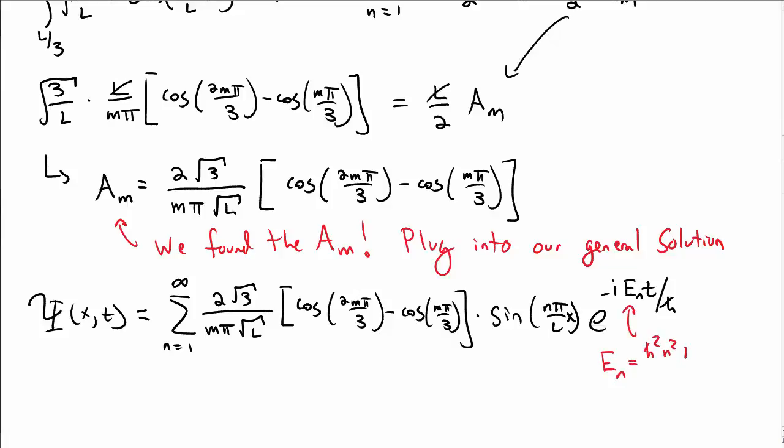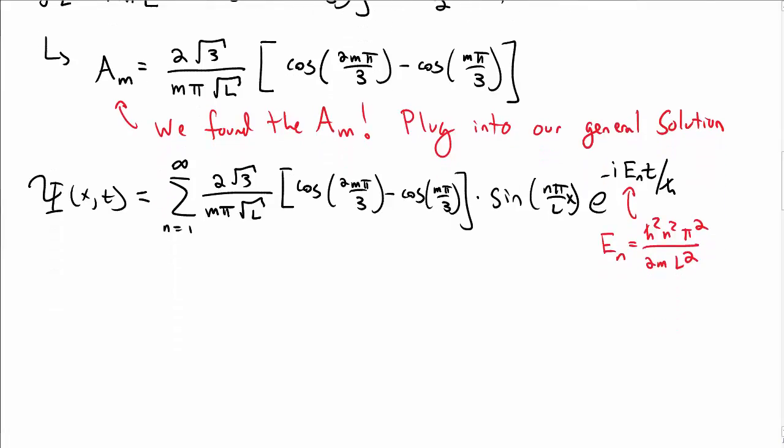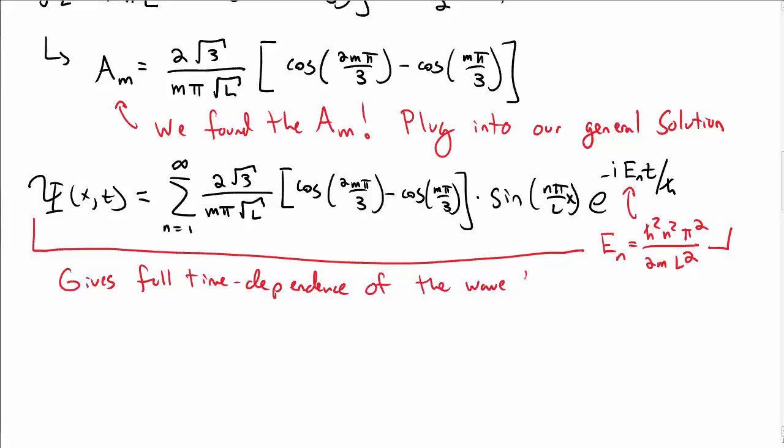So this now gives the full time dependence of the wave function. And don't forget that the e sub n is the usual e sub n energy that we have. So now we have the full wave function for all time, just by specifying the initial condition at t equal to 0.